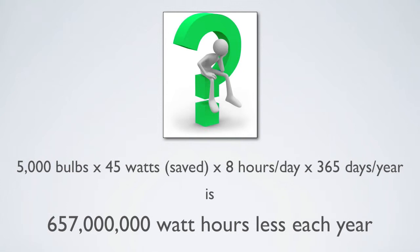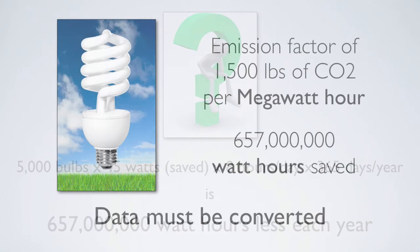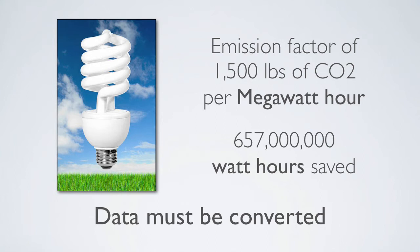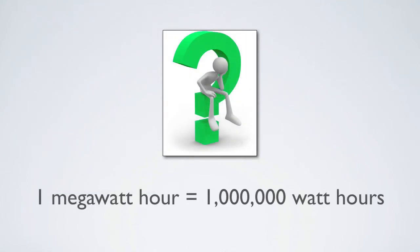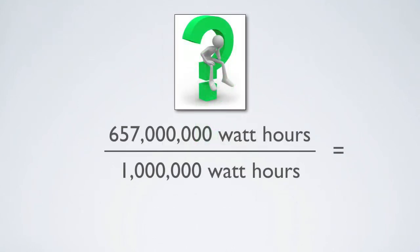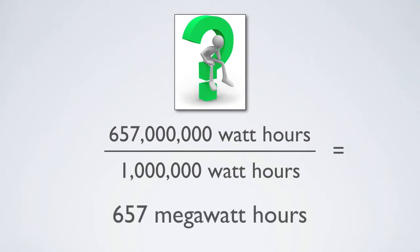Now that we have calculated the annual electricity savings, the next step is to multiply the result by the emission factor to calculate the greenhouse gas savings. But in this case, the emission factor is expressed in pounds of CO2 per megawatt hour, and the savings are expressed in watt hours. Before we can make the calculation, either the activity data or the emission factor must be converted. In this example, we are going to convert the activity data from watt-hours to megawatt-hours. 1 megawatt-hour is equal to 1 million watt-hours, so all we need to do is divide the watt-hours by 1 million to arrive at megawatt-hours. 657 million watt-hours divided by 1 million gives us 657 megawatt-hours.